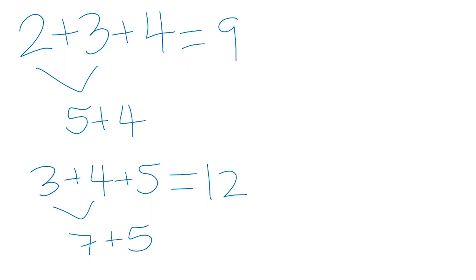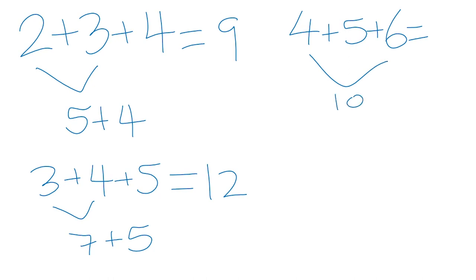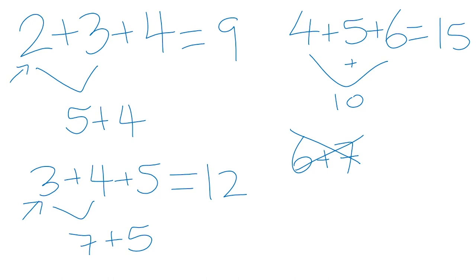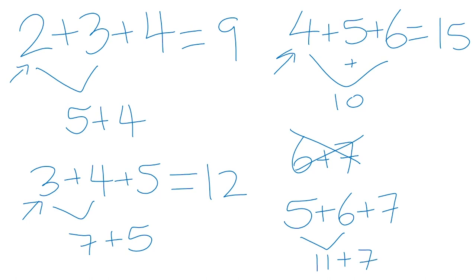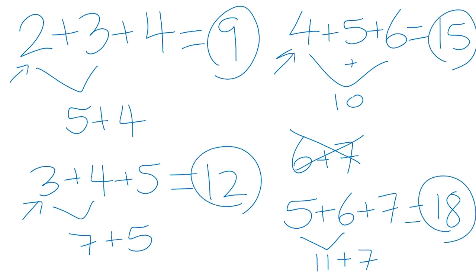Next, 4 plus 5 plus 6: I automatically see a 10, and 10 plus 5 is 15. I made a mistake — I skipped 5, but that's okay. So I'll do 5 plus 6 plus 7. I know 5 plus 6 is just one more than 5 plus 5, so that's 11, plus 7 equals 18. So we've got 9, 12, 15, and 18. Do you see a pattern?